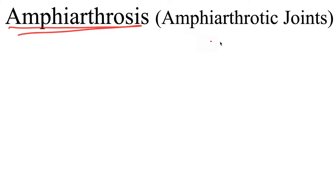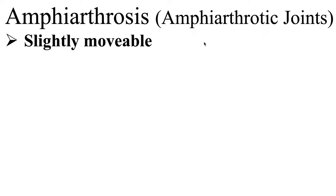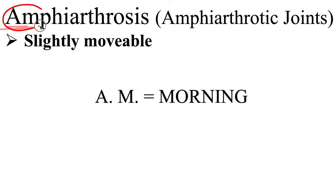Amphiarthrosis, also known as amphiarthrotic joints, are slightly movable — in other words, these joints have limited mobility or limited movement. A really easy way to remember amphiarthrosis is that it begins with AM. In the morning, especially in older age, it takes some time to get our joints going because they're limited in movement in the mornings. So just remember AM — amphiarthrosis, limited movement.